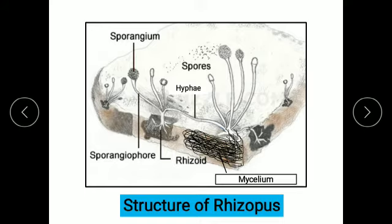The cytoplasm in the sporangium divides to form a mass of spores. When the sporangium breaks open, the spores are dispersed in air. These spores form a new mycelium if they land on a suitable medium. Some hyphae grow downward to obtain nutrients, forming a root-like structure called rhizoids. The rhizoids absorb nutrients from the substrate.